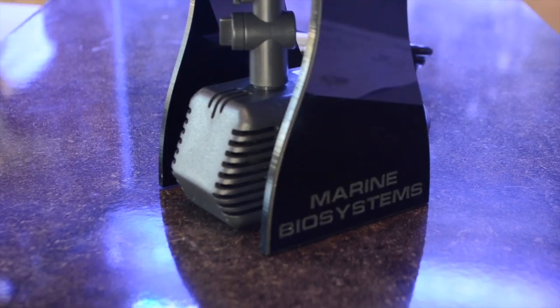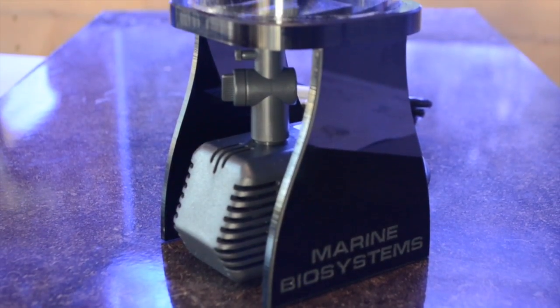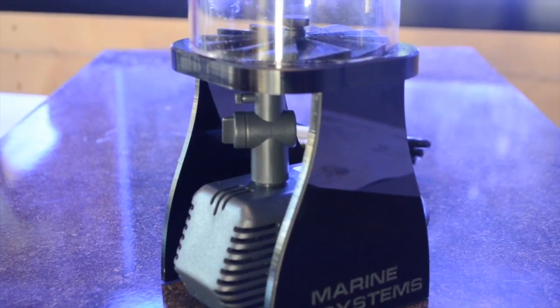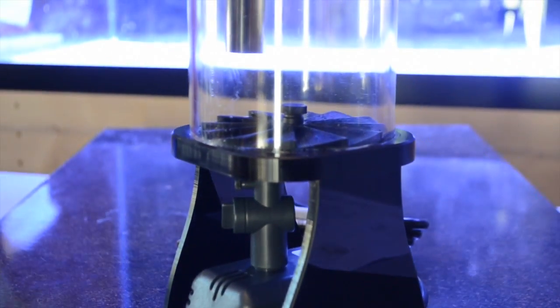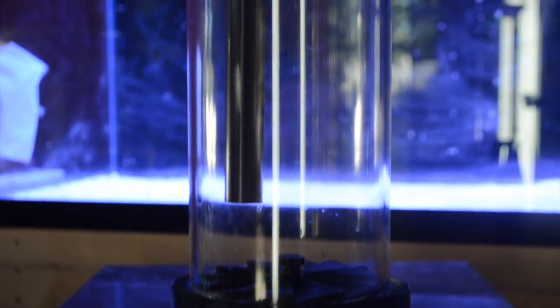The Marine Biosystems F5 Max has a capacity of 1500 milliliters of bio pellets. It's rated for 50 to 350 gallon systems and stands 17 inches tall and 5 inches wide.